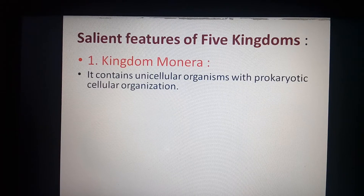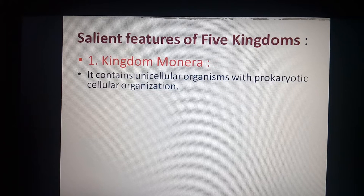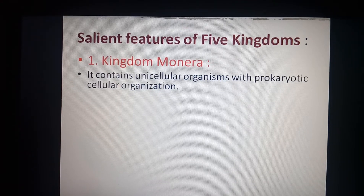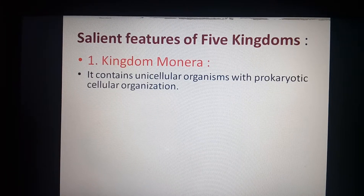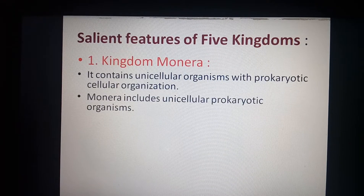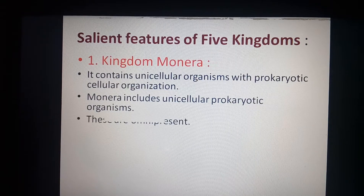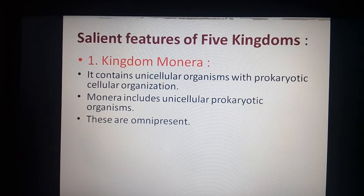There is an absence of cell organelles in prokaryotic cells. The ribosome present inside the prokaryotic cell is of the 70S type, whereas in eukaryotic cells it is of the 80S type. Since the cell here is prokaryotic, the ribosome is of the 70S type. Monera includes unicellular prokaryotic organisms and these are omnipresent — present everywhere.